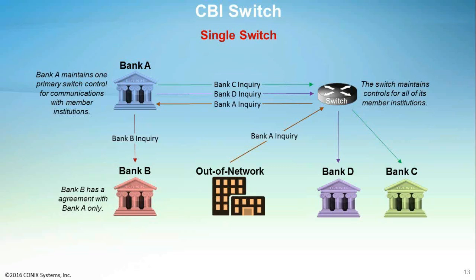The diagram shows an out-of-network inquirer sending an inquiry through the switch to bank A. Multiple switches can exist, in which case the switches would communicate through each other to access institutions serviced by other switches. Through cooperative efforts, financial institutions can capitalize on CBI to minimize risk, protect their clients, and increase revenue.